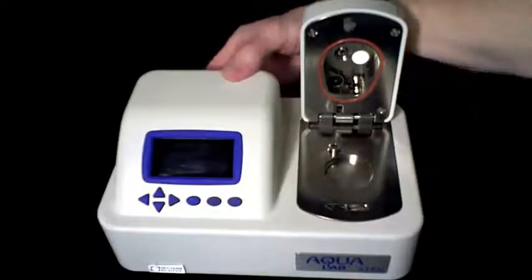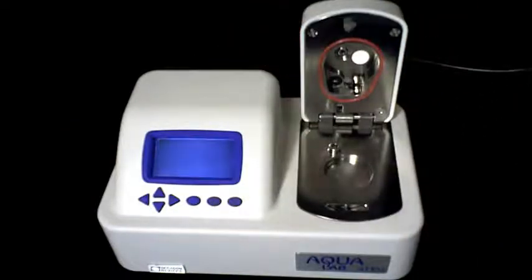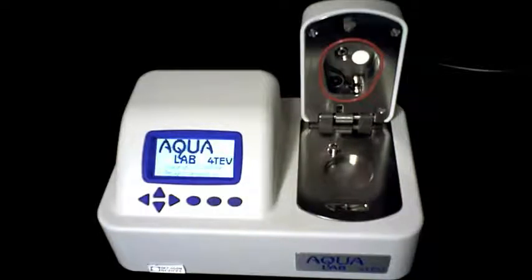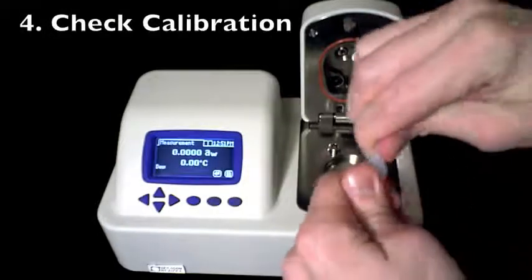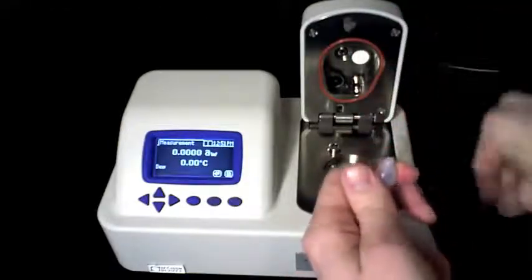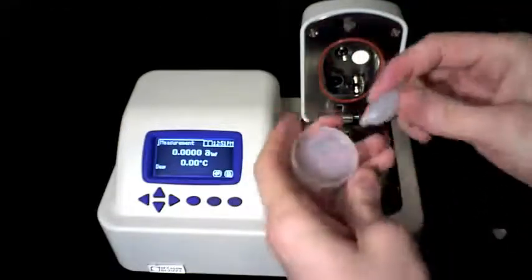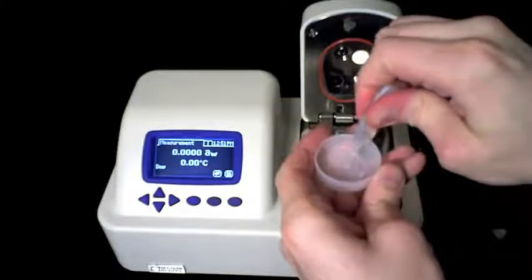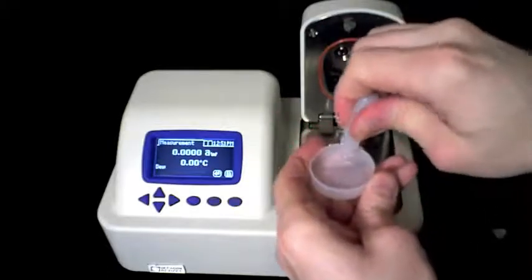After the cleaning process, it's important to verify that your instrument is operating properly. First, power your Aqualab back on. Then, take one vial of verification standards and put it in a sample cup. Place the sample cup inside the instrument and close the lid.